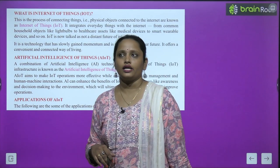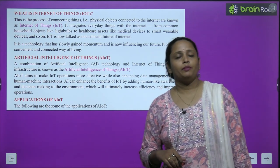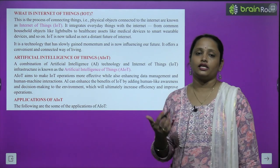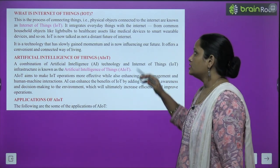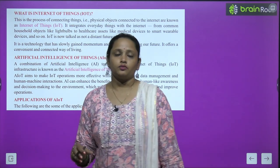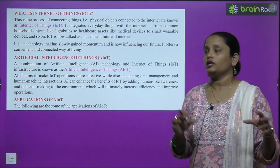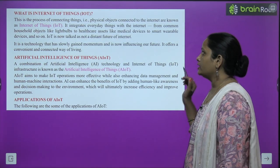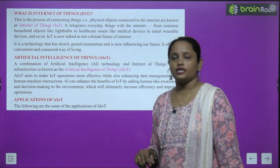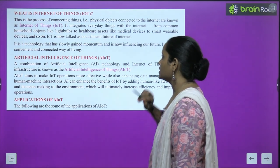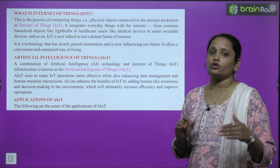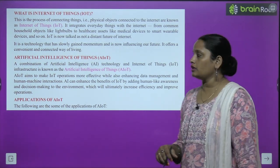Next is: what is Internet of Things? IOT क्या है, internet of things क्या होता है? This is the process of connecting things — ये एक process है चीज़ों को connect करने का, जैसे की physical objects को connect करना internet से। Internet of things means physical चीज़ों को internet से connect करना। It integrates everyday things with the internet — from common household objects like light bulbs to healthcare assets like medical devices, smart wearable devices, और भी बहुत सारी चीज़ें।